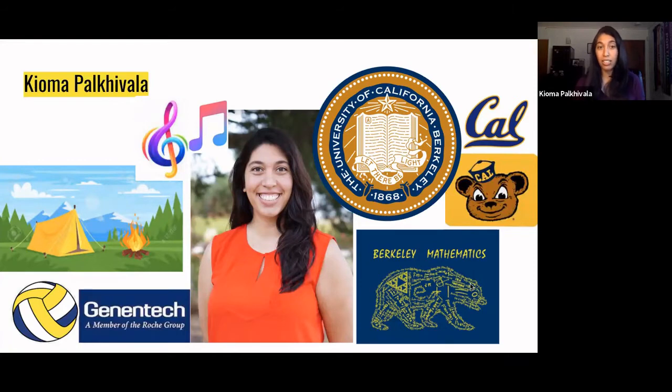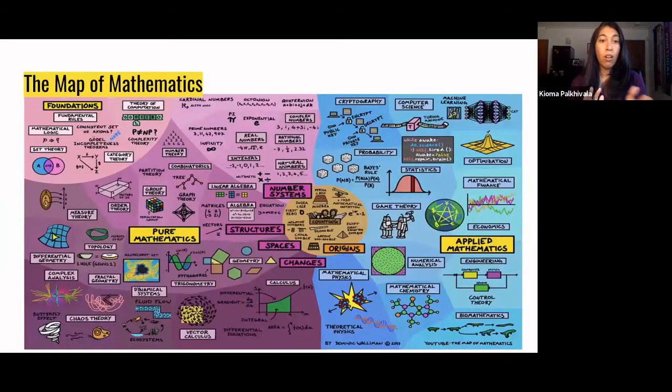When I got to college at UC Berkeley, go Bears, I wasn't sure exactly what I wanted to study, but I knew I kept wanting to take math classes because I enjoyed them. It was actually in college that I realized just how diverse math is. There's so many different branches of math, and at UC Berkeley, there's two main types that people study. There's pure math and applied math.